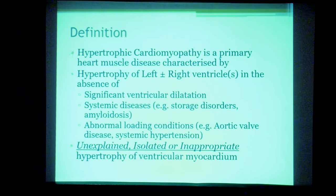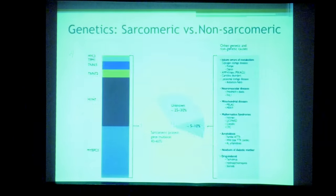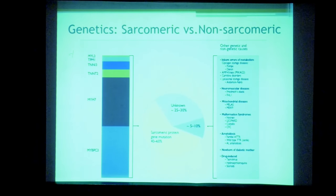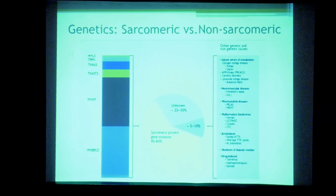The hypertrophy is termed 'inappropriate' when it is out of proportion to the abnormal loading condition — for example, mild aortic stenosis with significant LVH, or mild hypertension with gross hypertrophy. HCM is genetically divided into two types: the sarcomeric form, with mutations of cardiac sarcomeric proteins accounting for 40–50% of patients, and non-sarcomeric mutations in multiple syndromes such as Danon disease, Fabry disease, and Friedreich's ataxia, accounting for 5–10%. In 25–30%, no genetic mutation is identifiable.